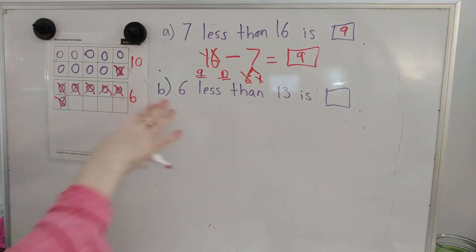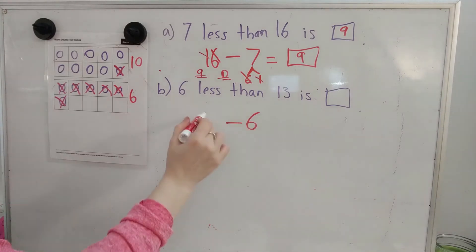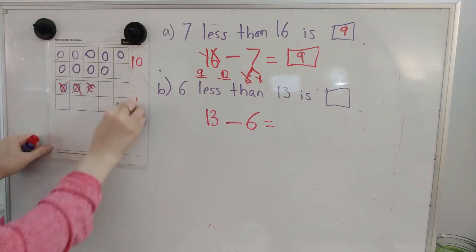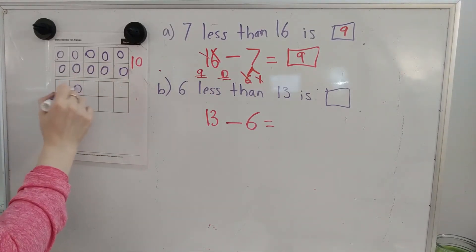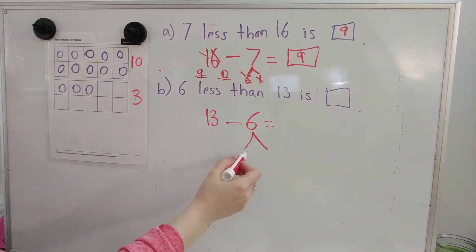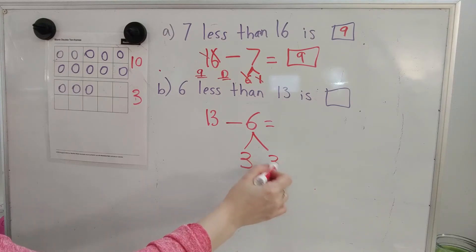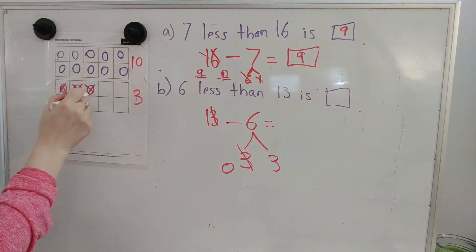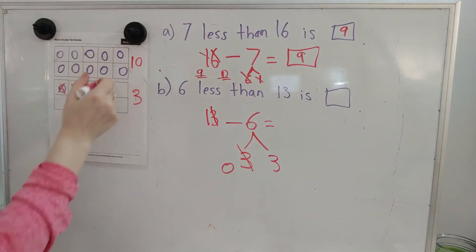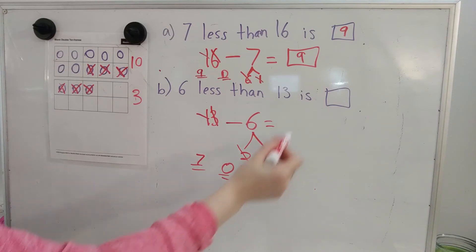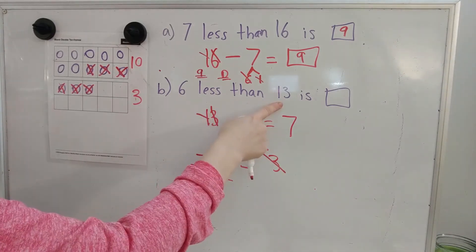Let's do letter B. 6 less than 13 is. Now we're subtracting 6 from the number 13. Here is my 13, and I'm going to take away my 6. Inside of the 6, there is a 3. What else is inside of the 6? I know 3 plus 3 is 6. So there are two 3's inside of the 6. Now I can subtract. 3 minus 3 is 0. 10 minus 3 is 7. Add those leftovers. 7 plus 0 is 7. So 6 less than 13 is 7.